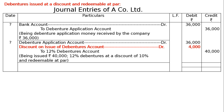Then total the journal — both columns, debit and credit — that is 76,000, both in the debit column and credit column. And this is the final answer. Issued at discount, redeemable at par.